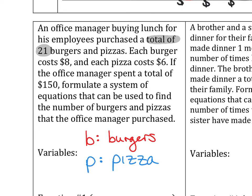If we keep reading, it says each burger costs $8. So number eight should be next to what letter? B for burger, right? And then it keeps going. It says pizza costs $6. Six should be next to what letter? P for pizza. And then you notice $8 and $6. There's both dollar signs on that one. So what else has a dollar sign in this problem? So we know where all of these numbers should go.